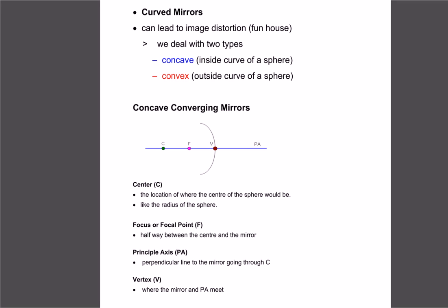We have two types of mirrors. A concave mirror — think of a sphere cut in half: concave is the inside of it. Convex is the outside. Concave would be the inside of your spoon if you look at your reflection; convex would be the backside or curvy side of the spoon. Concave mirrors will converge — we call them converging mirrors.